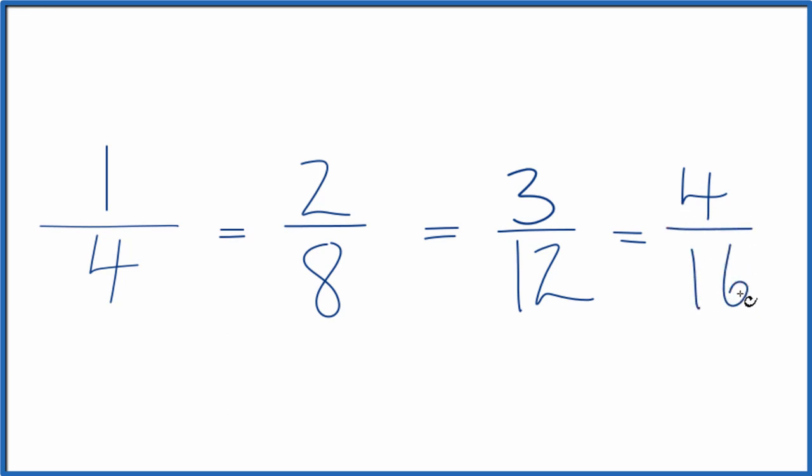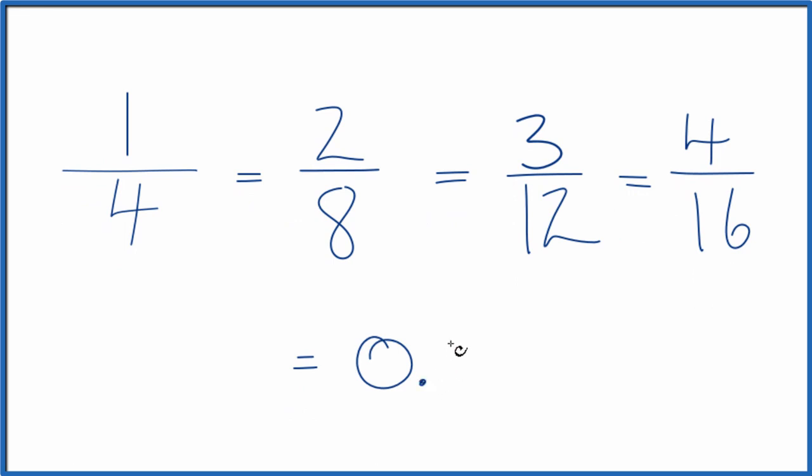So that's another equivalent fraction. If you divide one by four, two by eight, three by twelve, or four by sixteen, you'll get the same answer, 0.25.